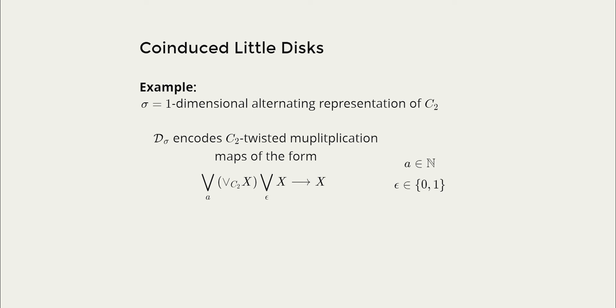So let's just quickly go over an example to sort of illustrate what this looks like. So for this example let's take sigma to be the one-dimensional alternating sign representation for C_2. Now the little disks operad over sigma parametrizes C_2 twisted maps of this form. Mike actually has a paper that goes about this in quite a lot of detail. And so it turns out that the coinduced operad encodes multiplication maps of this form. So that this form is fairly restrictive, particularly there's no wedge products over any of the cosets between the trivial one and the whole group.